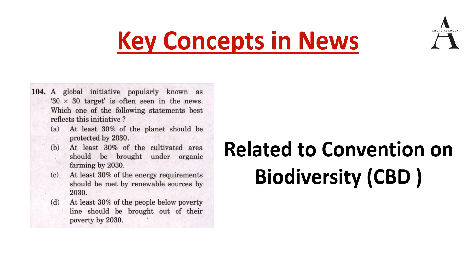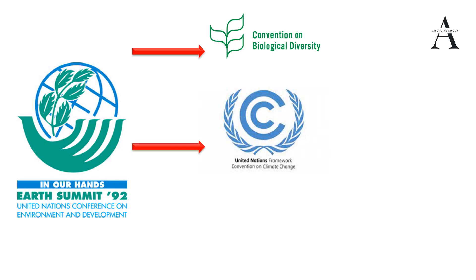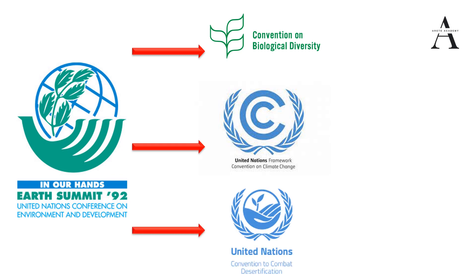First we will understand CBD and how we reached the 30 by 30 target, then find the answer. The CBD came out of the United Nations Conference on Environment and Development, known as UNCED, also called the Rio Earth Summit or Rio Conference. It was a major UN conference held in Rio de Janeiro in 1992. Three major legally binding agreements came out of this: the Convention on Biological Diversity, the UN Framework Convention on Climate Change (UNFCCC), and the United Nations Convention to Combat Desertification.